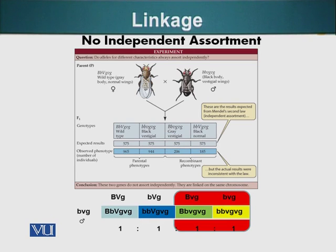So with this experiment, if we say that these genes are not assorting independently, that would imply that these genes are linked. The gene for body color and the wing type, if they are linked, these two genes are present on the same chromosome. Then how did we get these recombinant phenotypes, which I circled here? This would basically imply that chromosomes which were carrying these genes, at some point, exchanged little pieces.